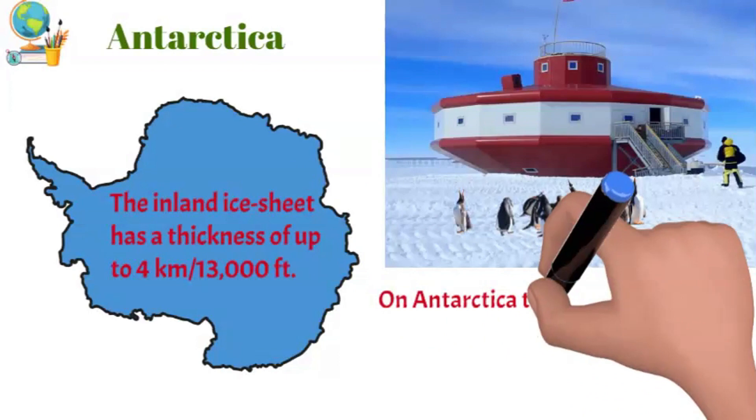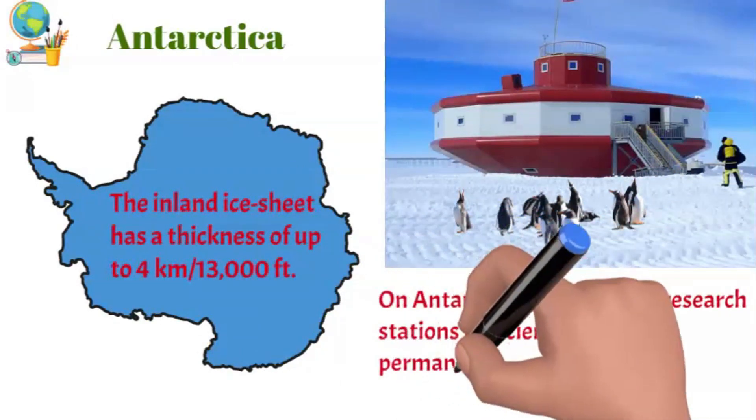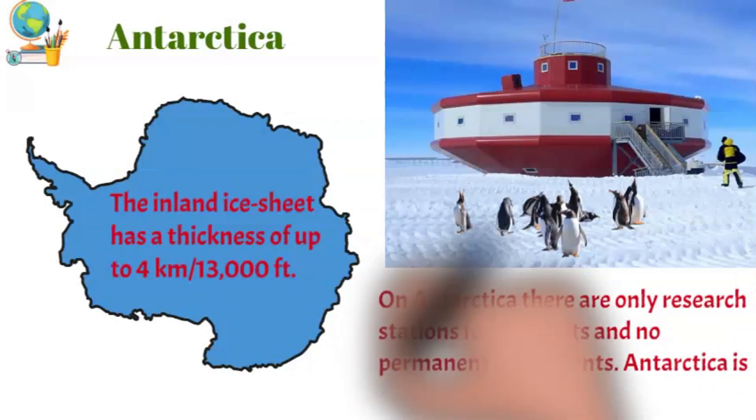On Antarctica, there are only research stations for scientists and no permanent settlements. Antarctica is covered almost completely by ice.